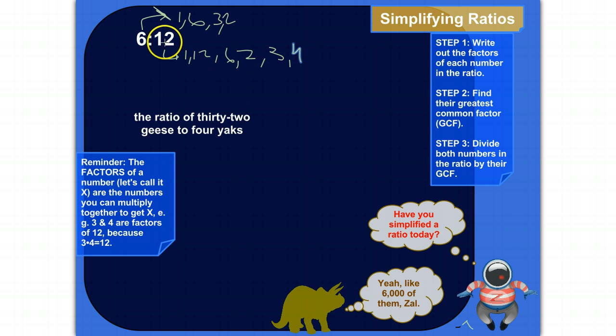So, those are all the factors of 12. Now, let's find the factor that they have in common. That's the biggest one that they have in common. For example, they both have 1 as a factor. But that's not the largest factor. That's not the greatest common factor.